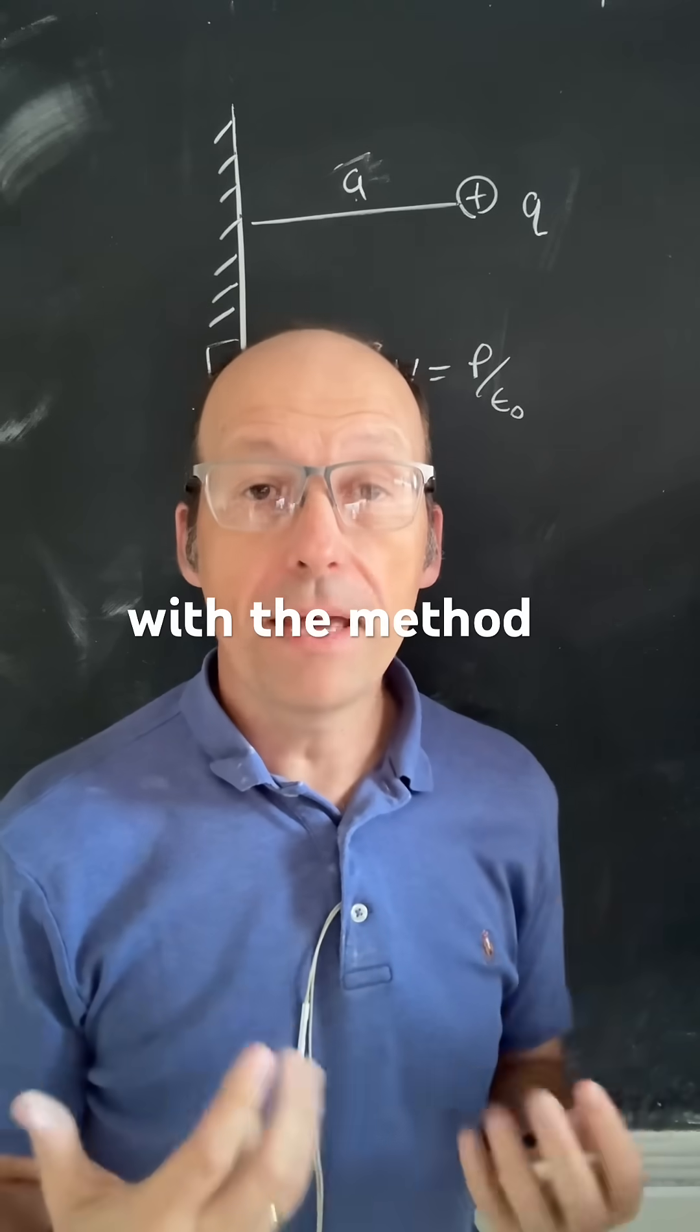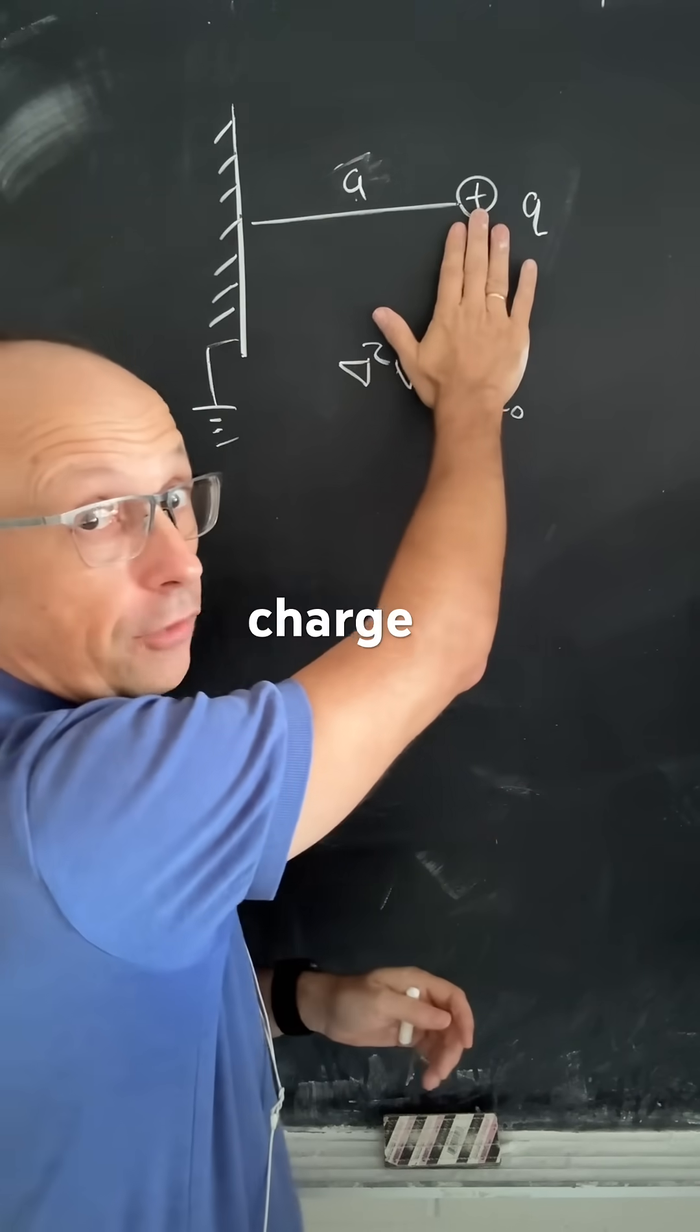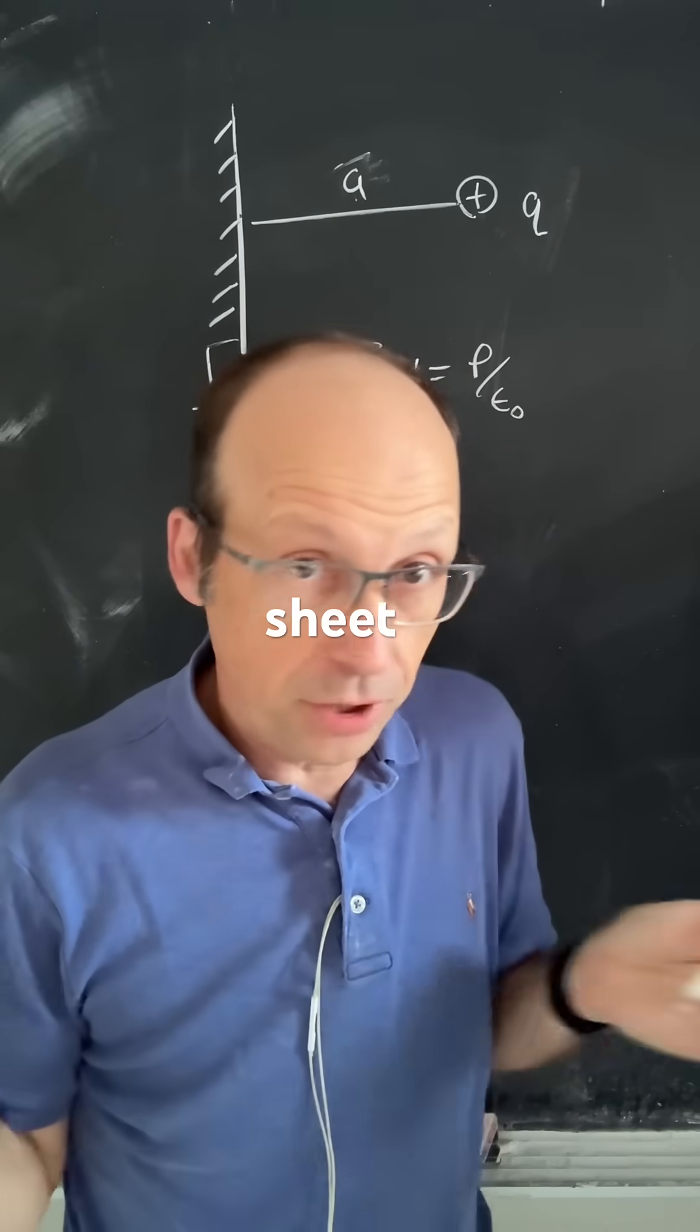What's the big idea with the method of images? Imagine that I have a positive charge right here near a very large, infinite conducting sheet of metal.